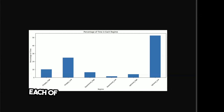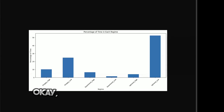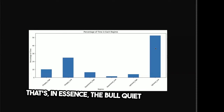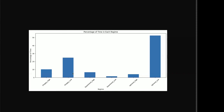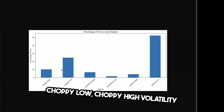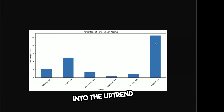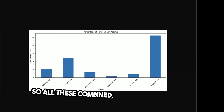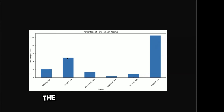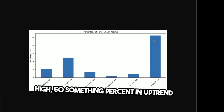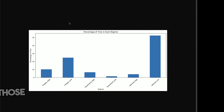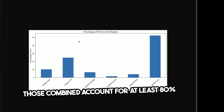In each of those conditions, the tool identifies what type of volatility is present — high or low. Right away you can see that the biggest regime is the uptrend low volatility, which is essentially the bull quiet market regime. Combining choppy low, choppy high, and uptrend low volatility accounts for at least 80% of the market going back to the 1800s when the S&P was built.